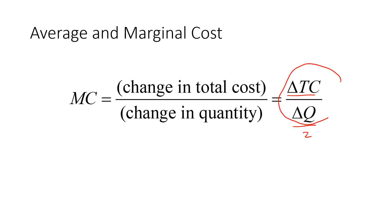The formula for marginal cost is change in total cost divided by change in quantity. If we are finding marginal fixed cost, then instead of total cost we use the fixed cost in the numerator.